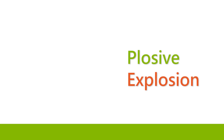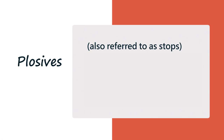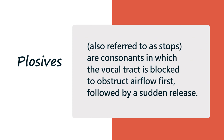Once you hear the word plosive, you might associate it with the word explosion, and that's not actually a bad association — the word is related to it. Some linguists use the word stop instead of plosive, which I'll clarify later. But plosives are basically consonants in which the vocal tract is blocked to obstruct the airflow, followed by a sudden release.